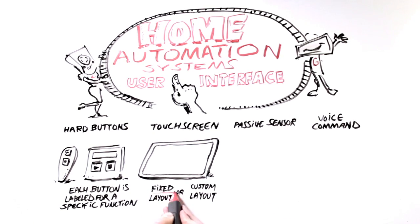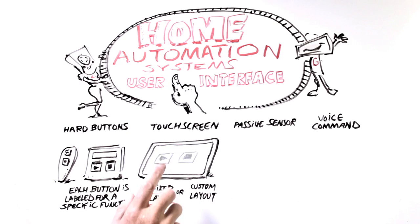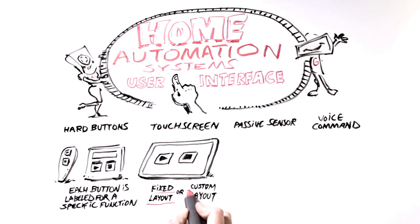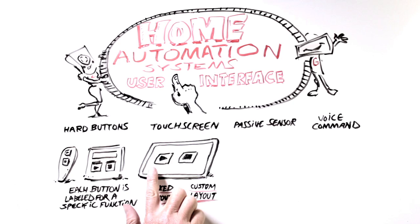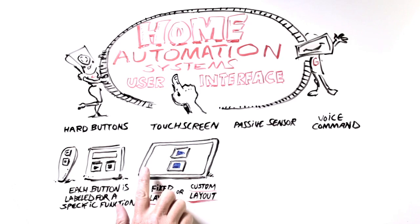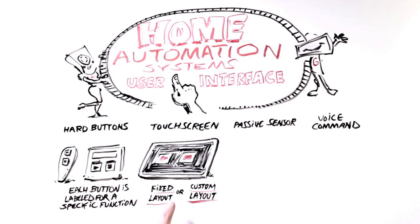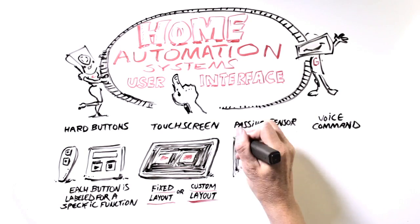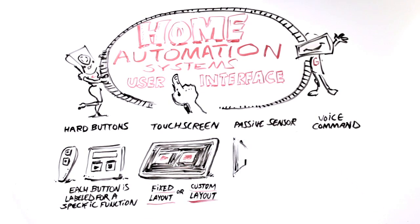A fixed layout touch screen contains essentially the manufacturer's graphics, whereas a custom layout touch screen can be graphically personalized in a multitude of ways. These are often more expensive because of the added programming time to provide customization.